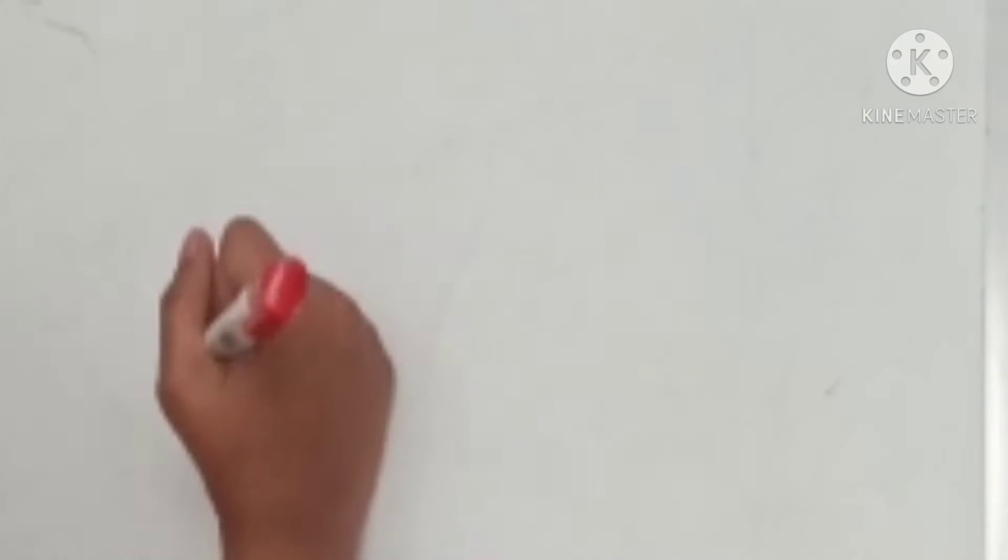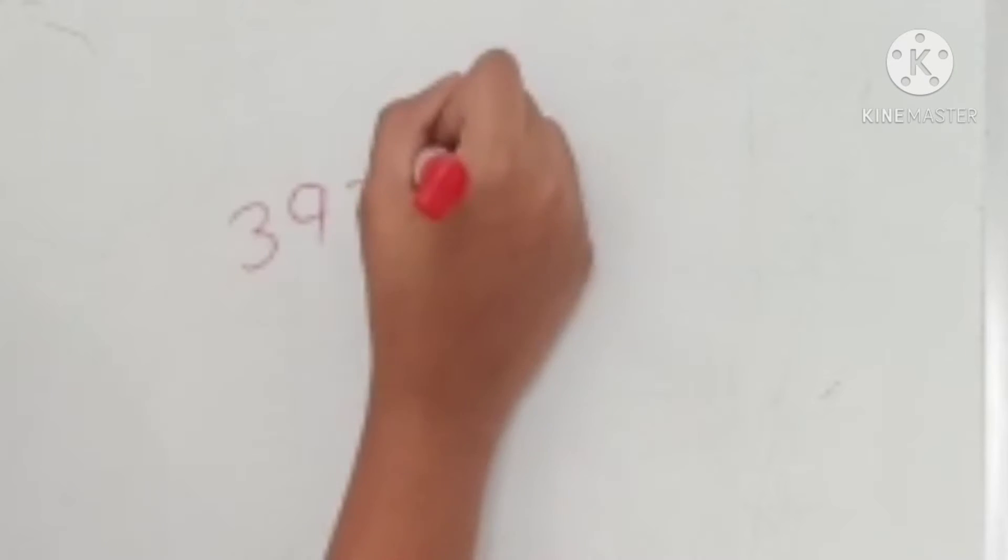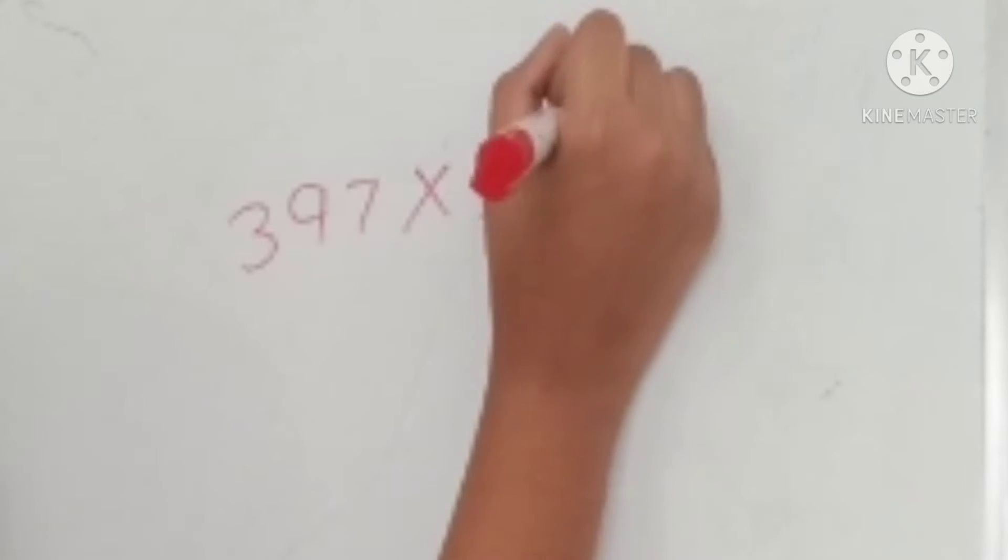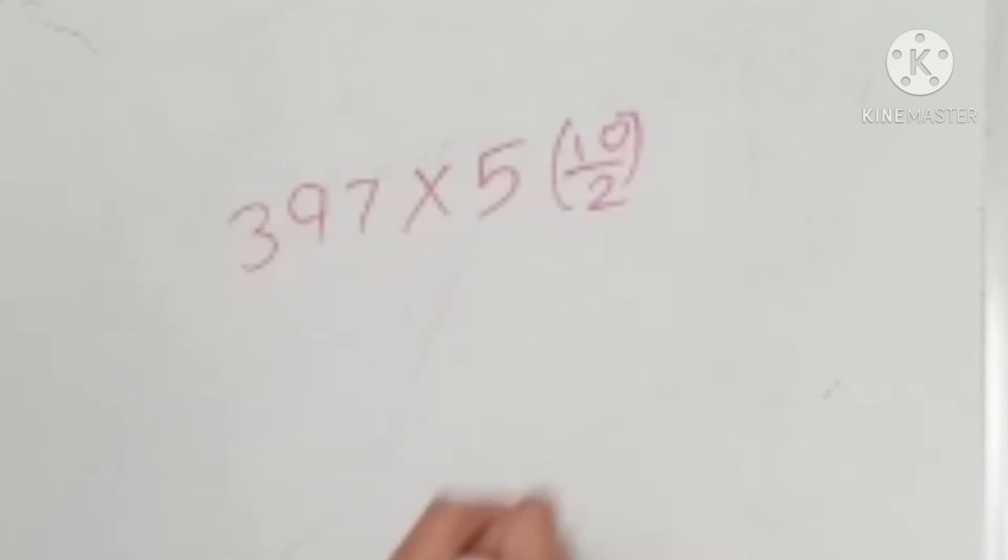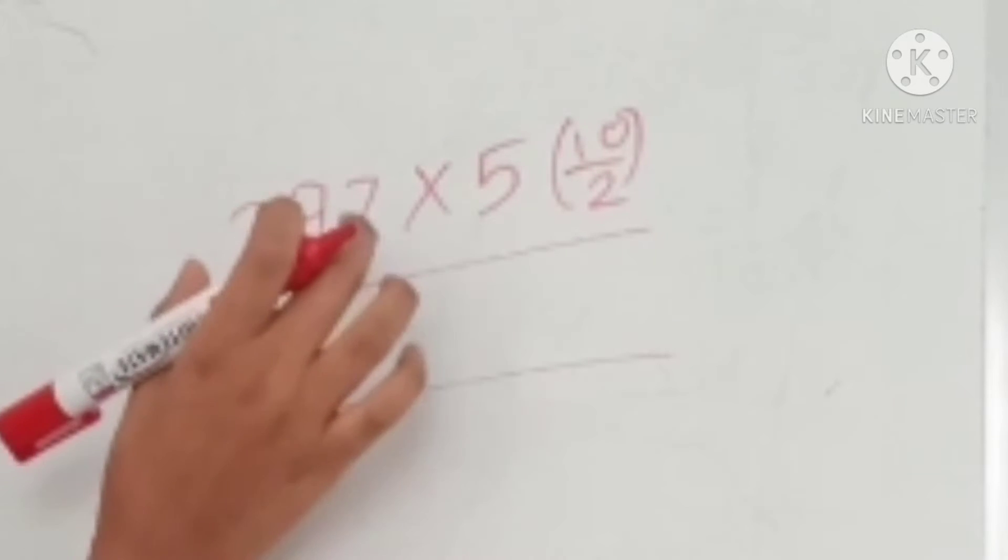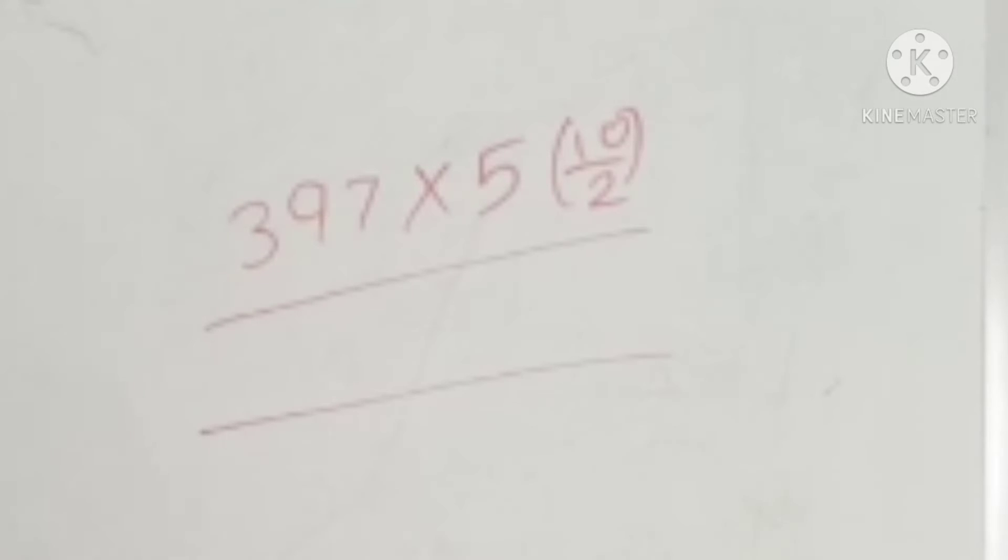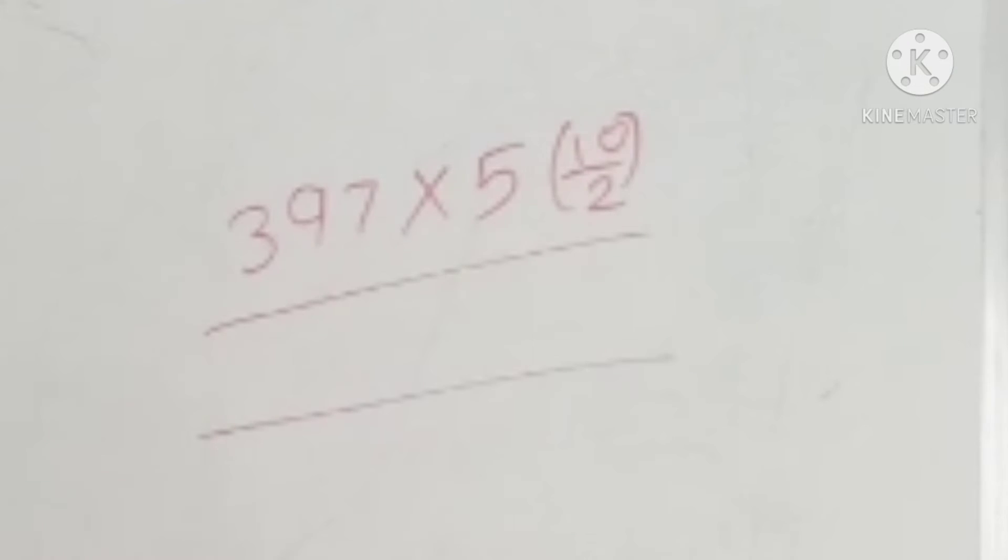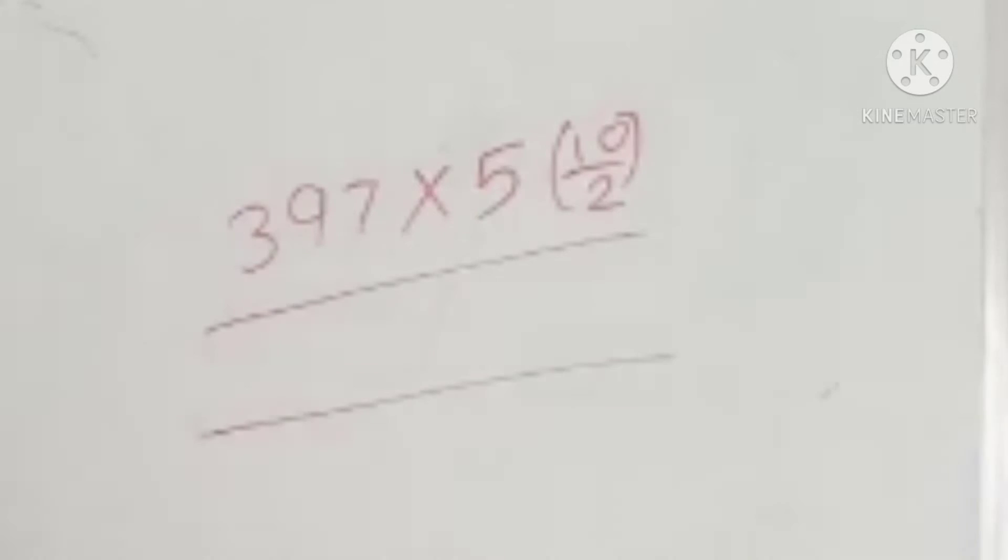Now let's take a bigger example. Let's take 397 multiplied with 5, which is nothing but 10 divided by 2. Now in this case, when the number is odd, what we'll do is you'll again divide or you'll see when it comes in 2's table. Now if you check, 3 doesn't come in 2's table. So what you're going to do instead, you'll just find the nearest number which is 2. So 2 ones are 2, and if you minus the both numbers you'll get 1. You'll put 1 to the next one.